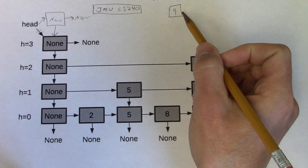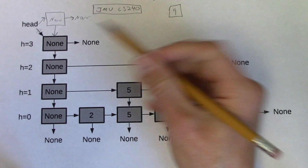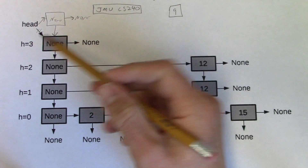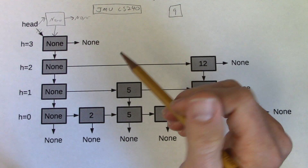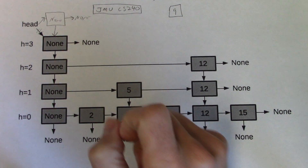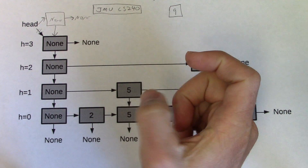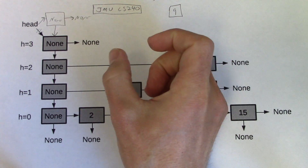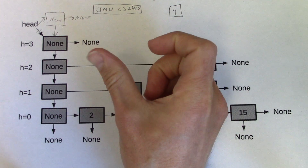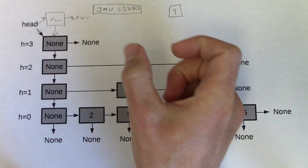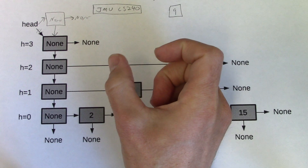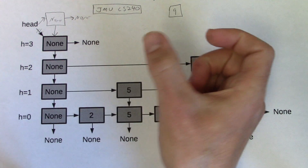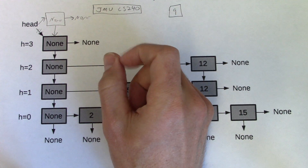We'll modify our head reference so that it refers to the newly created node. At this point we're ready to insert the 9 — we've got a tall enough stack of sentinels to contain it. Throughout this demonstration I'll use my thumb to represent our current external reference to a node in the skip list. In the pseudocode that we've provided, that's cur. So my thumb represents cur.